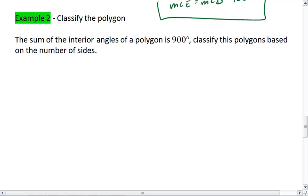The sum of the interior angles of a polygon is 900 degrees. I want you to classify the polygon based on the number of sides. Take a moment, try to work this one out for yourself first. Resume the video when you're ready to see the solution.